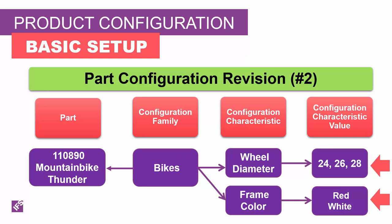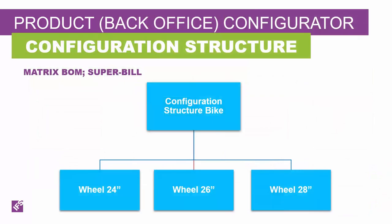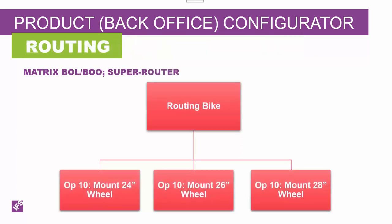Now let's look at how this works. For single-level and multi-level configured products, you need to define a configuration structure instead of a product structure, though the configuration structure can include sub-assemblies that are standard products with a product structure. The configuration structure required to support procurement and manufacture of the bike would look something like this — each characteristic value is represented in the configuration product structure. Likewise, the routing required to support assembly of the bike represents each characteristic value.